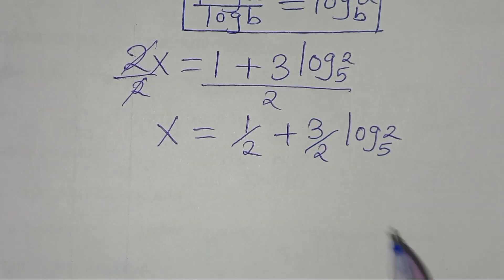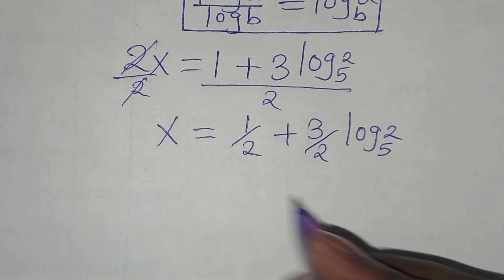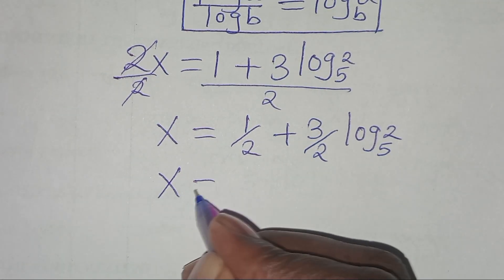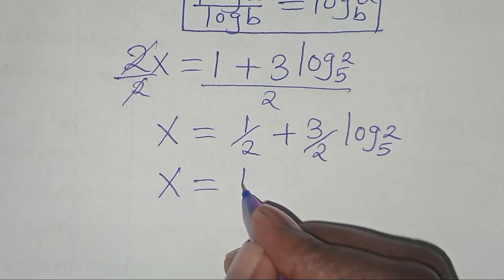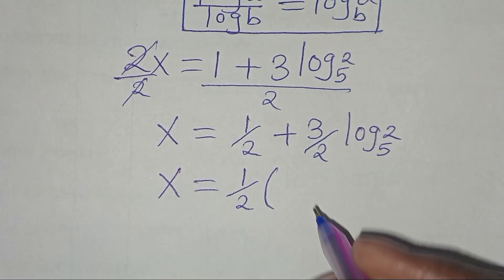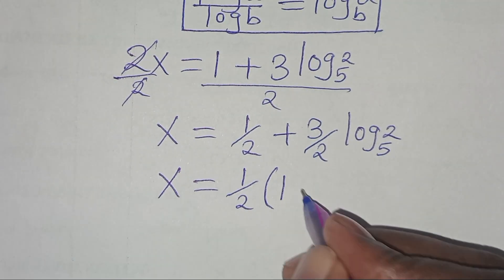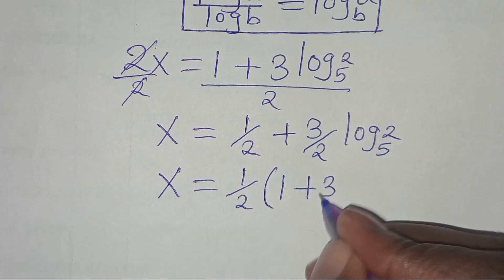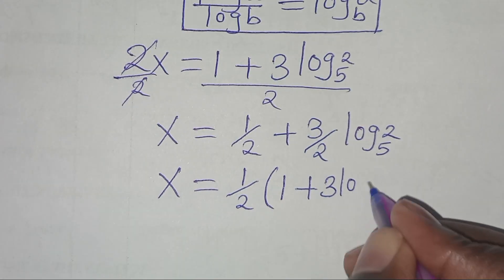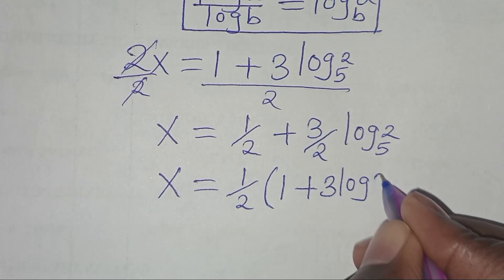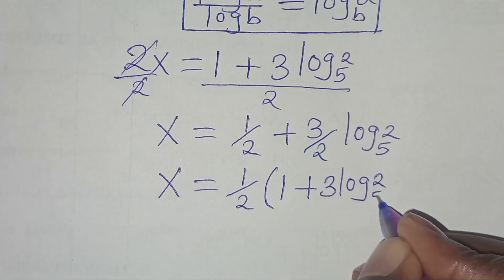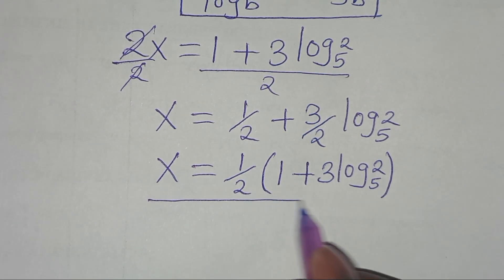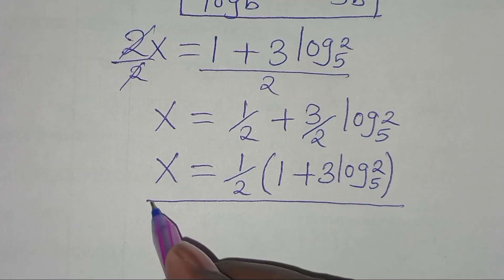So we have 2x equals 1 plus 3 times log base 5 of 2. Therefore the value of x is one half times the quantity 1 plus 3 log base 5 of 2. This is the value of x.